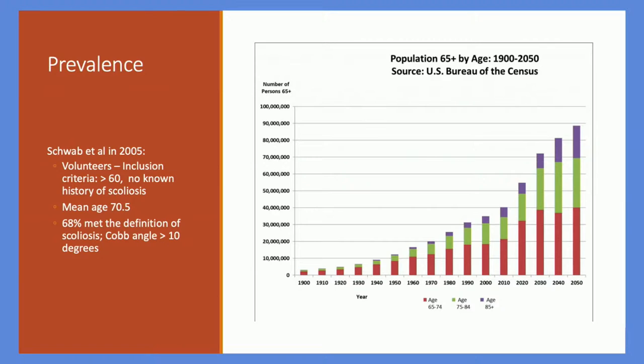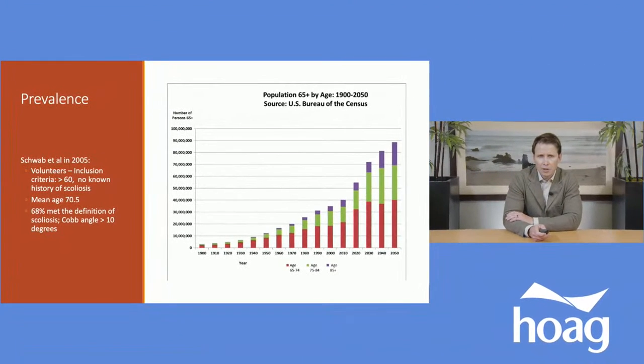This graph shows the population trend in the United States. Past 2020, the percentage of patients age 60 and above is increasing — we are living longer and healthier lives, but our spines continue to undergo degenerative processes. In a study by Schwab in 2005, volunteers aged 60 and above with no known history of scoliosis or prior spine surgeries were shown to have 68% meeting the criteria of scoliosis — a Cobb angle of greater than 10 degrees.